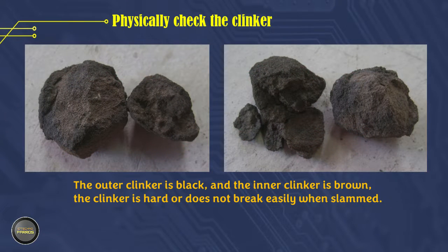Next, we check the physical shape and color of the clinker coming out of the cooling system. Physically, the outer clinker is black and the inside is brown, and the clinker is hard or does not break easily when slammed. This is influenced by several causes: melting occurs earlier in the transition zone before entering the combustion zone, so the material begins to form granular which is still raw inside. The shape of the flame is too long and touches the material continuously. The cooling zone inside the rotary kiln is too long, which can be caused by low kiln rotation, low secondary air temperature, or the kiln outlet hood draft setting being too negative.